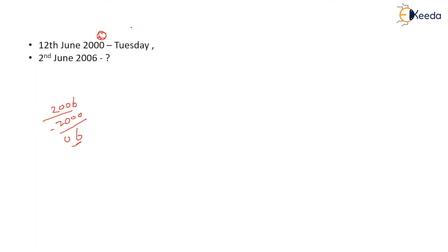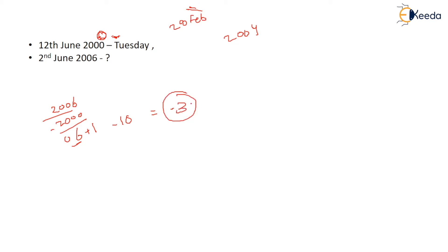The year 2000 won't count because 29 February has already gone before we count it. So 2000 we won't count, but 2004 we will count — we add one. After subtracting 2 from the result, you get minus 10, and after solving this you get minus 3. But minus 3 cannot be a remainder, so you have to change it to a positive value by adding 7.